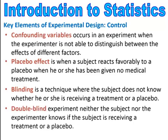Double blinding — or double blind — is an experiment where neither the subject nor the experimenter knows if the subject is receiving the treatment or the placebo. That would be double blinded when no one knows.